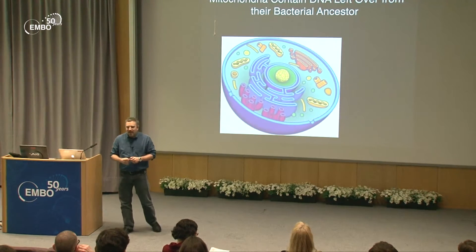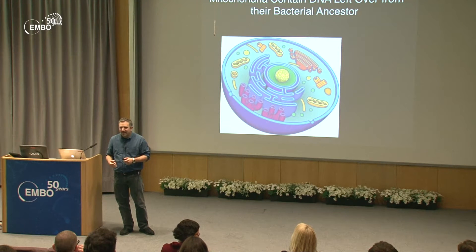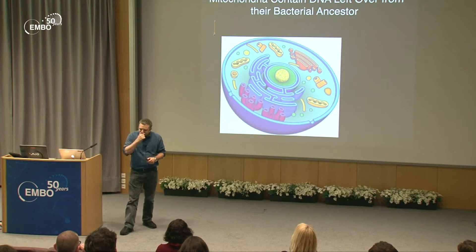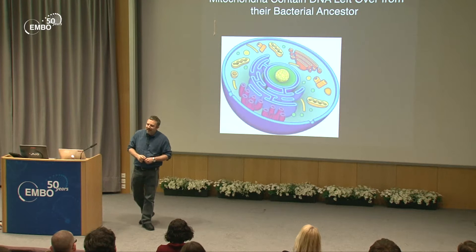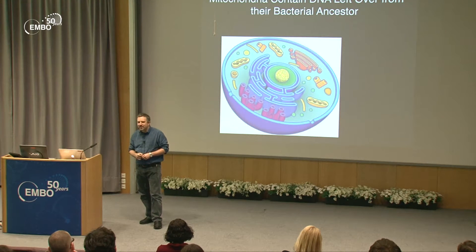At around the time eukaryotic cells were first developing, there were two prokaryotes thought to be living side by side helping one another. One engulfed the other and that became the mitochondrion; that prokaryotic genome was reduced further and further. Genes were transferred to the nucleus, but there is still a relic DNA in the mitochondria, important for ATP generation and pumping protons across the inner membrane.